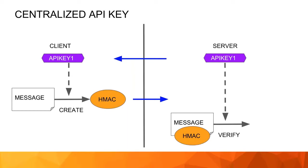This is how API keys work in a centralized environment. The client and server share an API key — normally the server creates it and the client can copy and store it. When it needs to communicate to the server, it uses the shared secret to create a message authentication code, in this case an HMAC, which is very fast and popular. The message along with the authentication code is sent across, and the server can use the same secret to regenerate the authentication code and verify everything.